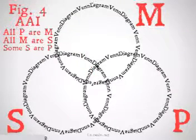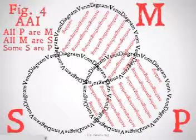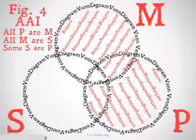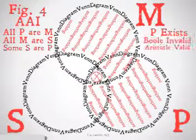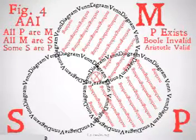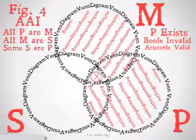And finally, Figure 4, AAI: All P are M, all M are S, therefore some S are P. We will shade it in. We see that it's not going to be Boolean valid because we are drawing a particular conclusion from universal premises. However, it might be Aristotelian valid. We're going to put that X with a circle around it in the only spot available to us in the P term. We find out that P exists, which means that even though it's Boolean invalid, it's going to be valid for Aristotle. Note that this is the only formulation of any categorical syllogism where it actually matters whether or not P exists.